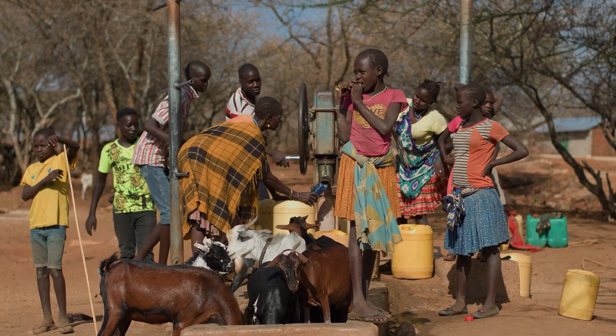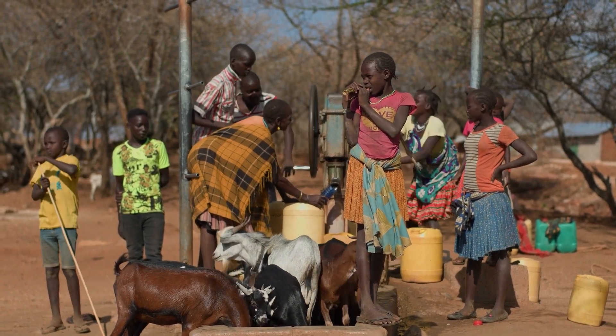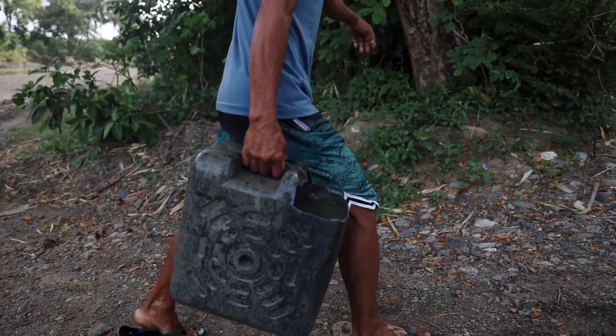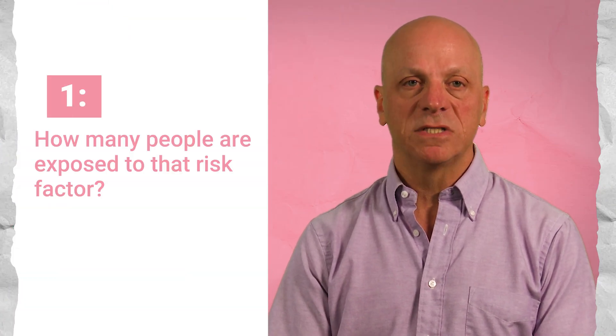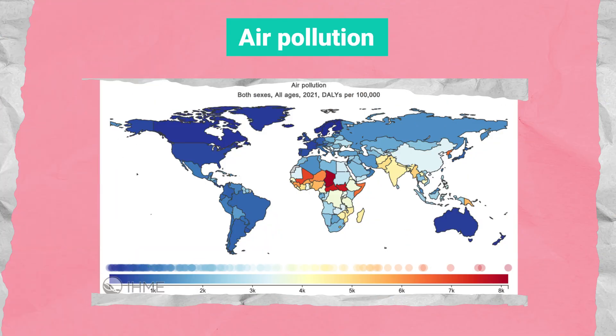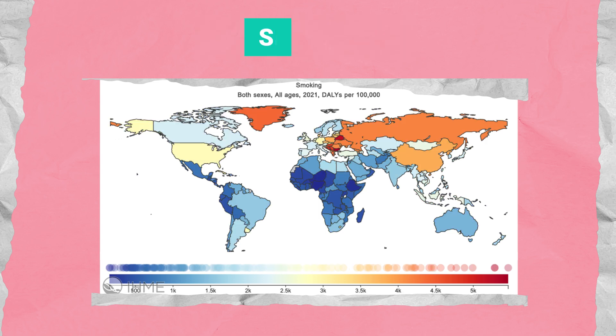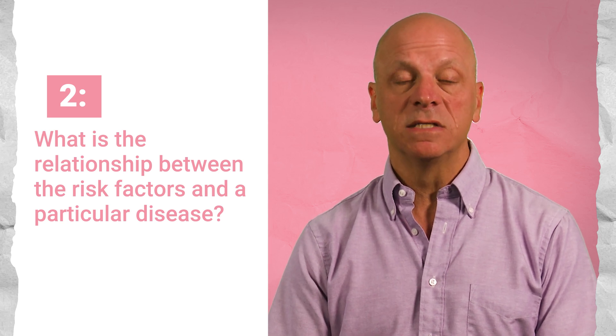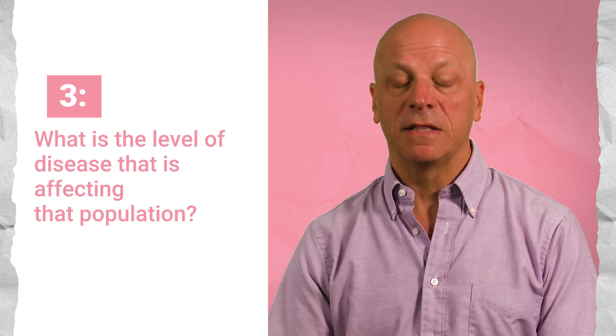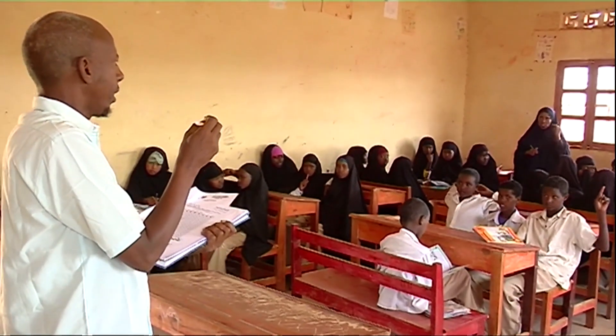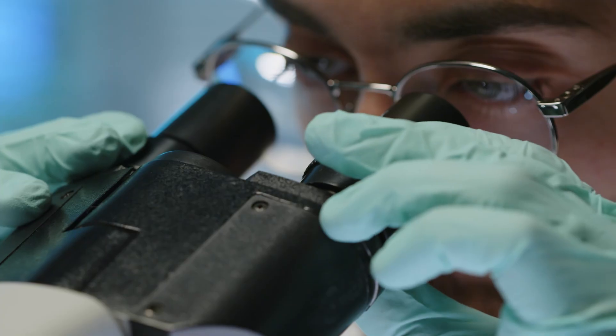Much of the work I'm involved with is really trying to understand risk factors for those diseases — for example, what amount of diarrheal disease is coming from poor access to drinking water. To do that we need to understand three things: how many people are exposed to that risk factor, such as a level of air pollution, warmer temperatures, or how many people are smoking. We also need to understand the relationship between those risk factors and a particular disease, and we really get that from the scientific literature, assimilating information from all the different studies done by researchers around the world.